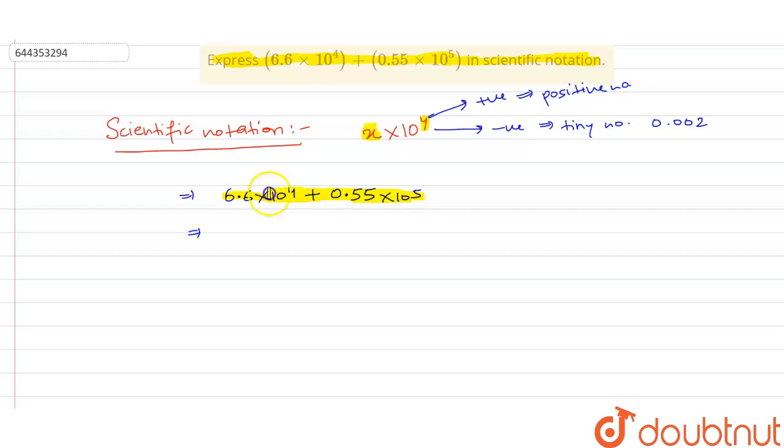But we have to add the scientific notation. For this, what we have to do? We have to make the power same for the addition. Important to be remembered: for addition and subtraction, exponents of two numbers must be same.